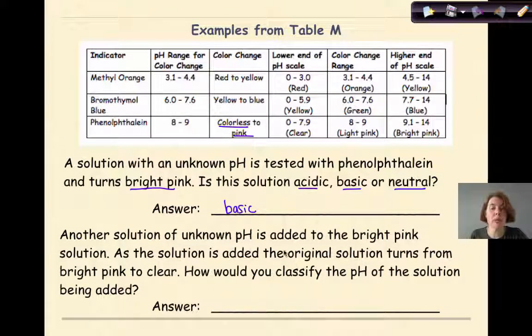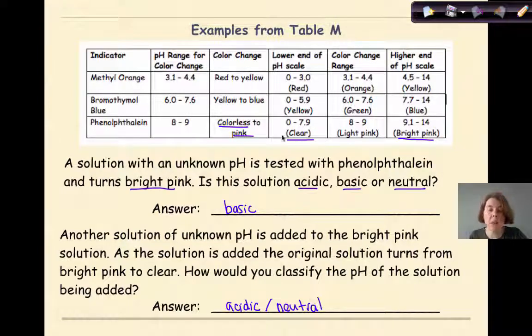Another solution of unknown pH is added to the bright pink solution. As the solution is added, the original solution turns from bright pink to clear. How would you classify the pH of the solution being added? So we're starting out with a basic solution where it's bright pink. We're adding another solution, which is making the current solution turn clear. The clear color range is from 0 to 7.9 in terms of pH. So I would say from 0 to 7.9, if it's turning clear, we're looking more at an acidic or potentially neutral solution. So I'm going to put acidic, potentially neutral, because this whole range goes from 0 to 7.9, and we know that 7 is neutral.